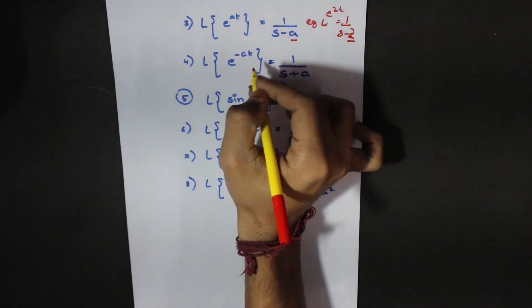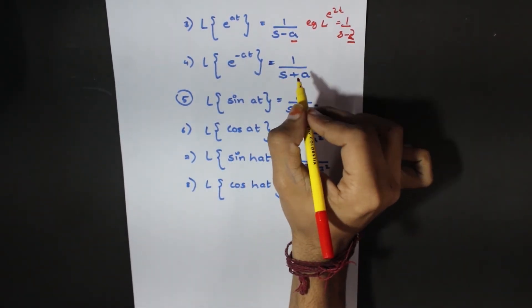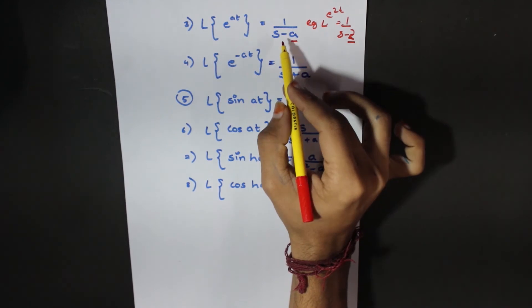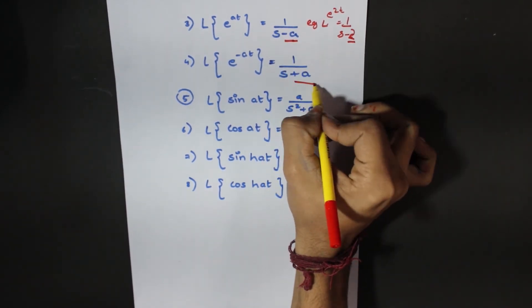Next we have e to the minus at. This is 1 over s plus a. This is minus a and plus a.